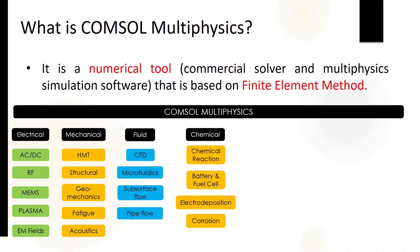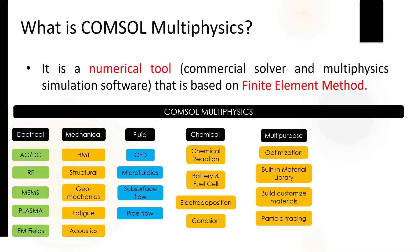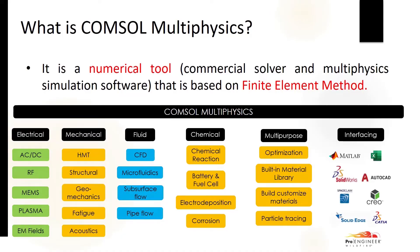Moreover, it has capability to deal with different chemical problems — it can solve chemical reactions, and you can also design batteries, fuel cells, electrodeposition, and corrosion. This software is also used for multi-purpose tasks like optimization, and it has a built-in material library. You can also build your own customized material. It also has capability to trace particles flowing in a fluid using different modules like particle tracing.